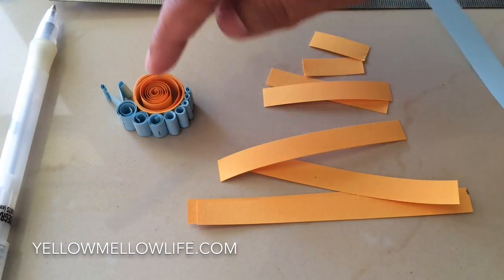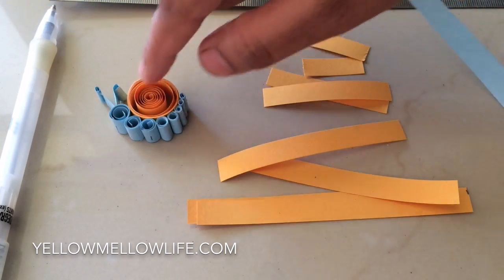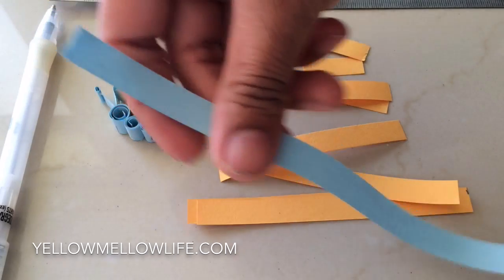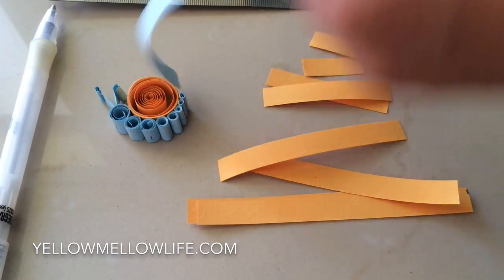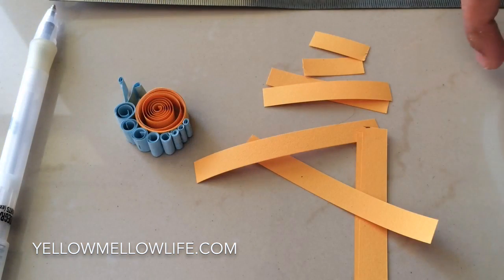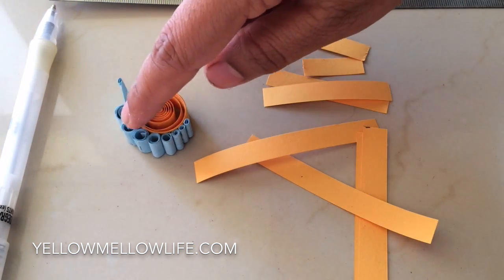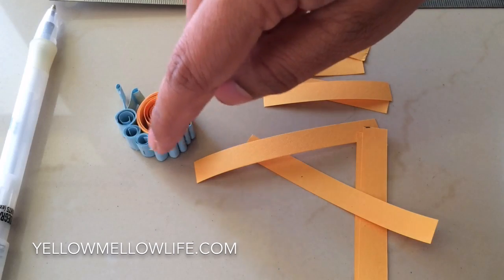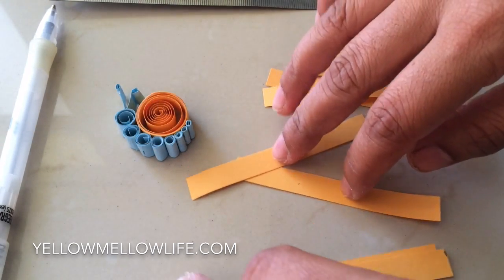The strips that I'm going to use for the body of the snail, the shell of the snail, I'm going to use a strip which is about 20 inches in length. And then for these small legs that I made for the snail, I'm going to use strips of different length. What I did was I took a long strip of 20 inches and then I cut it into different parts.